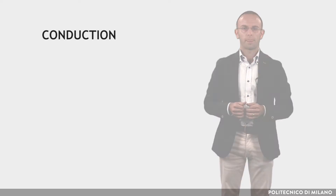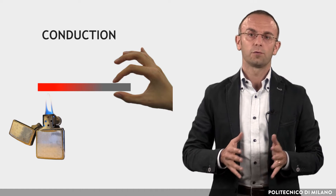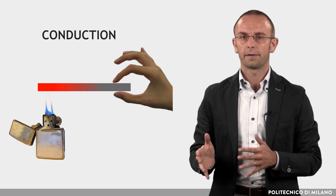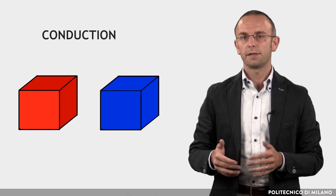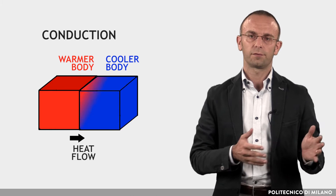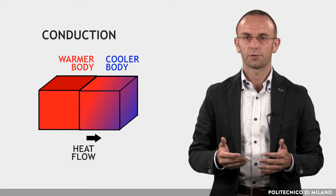Let's start with conduction. When a solid body is heated, the heat is transmitted by conduction from one end to the other. The atoms of the warmer part of the body transmit their greater thermal agitation to those next to them, and the body progressively increases its temperature. When the body is heated continuously from one part and has reached a steady state, the temperature gradient through it is linear. This is the case of a homogeneous wall heated on one side.